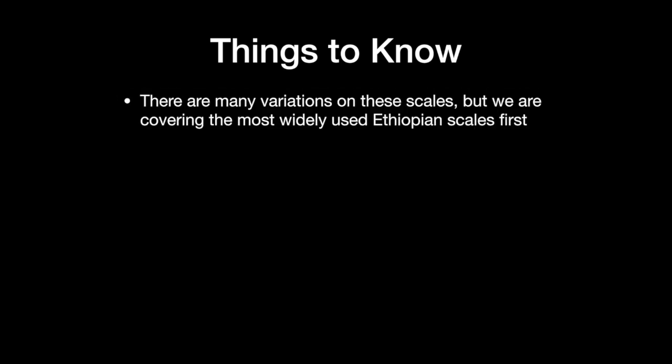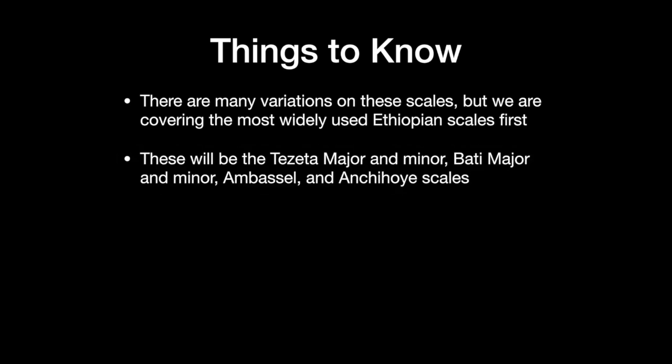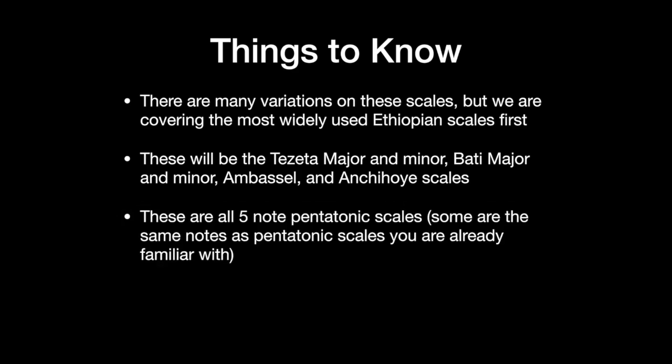There are many different Ethiopian scales, but today we're going to focus on the most commonly used ones: the Tisita major and minor, the Bati major and minor, the Ambasal, and the Anchoi scales. These are all five-note pentatonic scales.